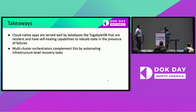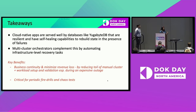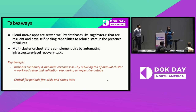Takeaways: cloud-native apps are well served by resilient databases like YugabyteDB, which has self-healing capabilities to rebuild state in the presence of failures. Multi-cluster orchestrators complement this by automating infra-level recovery tasks in the presence of region and cluster-level failures. The business benefit is ensured business continuity, minimized revenue loss by reducing the toil of setting up clusters and reconfiguring workloads during an outage, and the ability to run periodic fire drills and chaos tests. An HADR policy that is not periodically tested is equivalent to having no HADR policy.